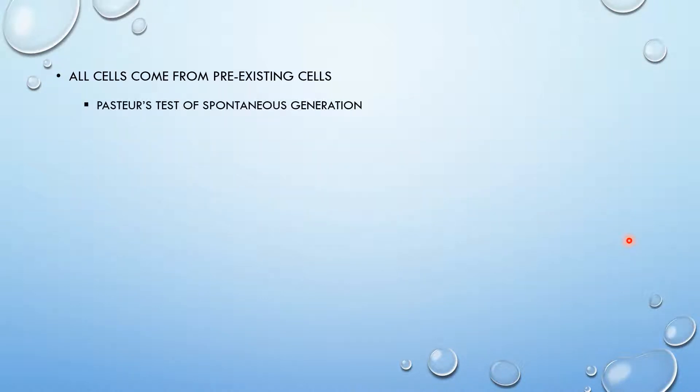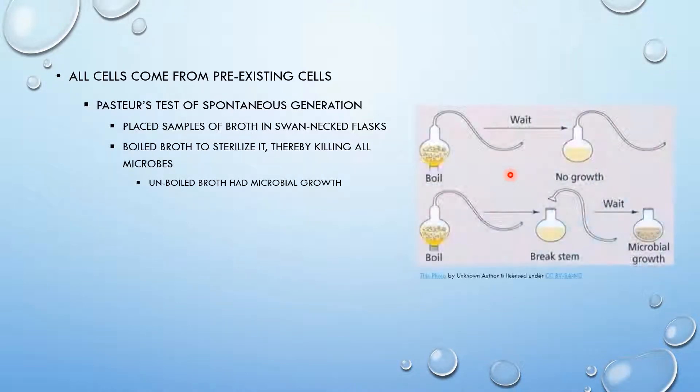Pasteur's test of spontaneous generation disproved spontaneous generation once and for all. What he did is he placed samples of broth in swan-necked flasks, which are normal flasks with a swan neck. And why did he use this? Well, what he tried to do was say that even if an environment has access to air, as in these swan necks, if it doesn't come into contact with outside materials such as microbes, spontaneous generation will not occur.